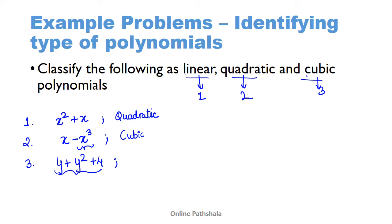In the third example, y + y² + 4, the degree of this polynomial is two because y is raised to the power two. This is the maximum value of the exponent, and therefore this is a quadratic polynomial.